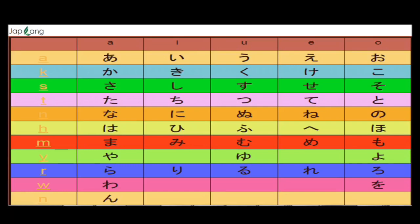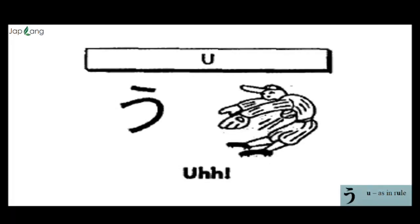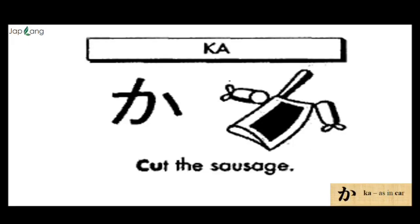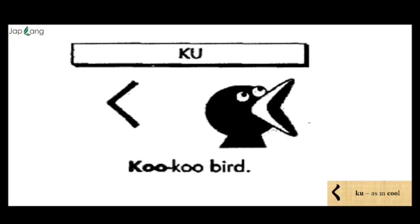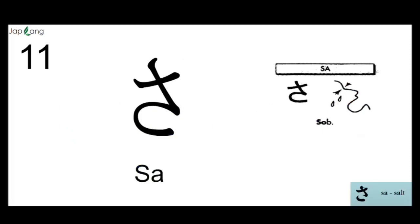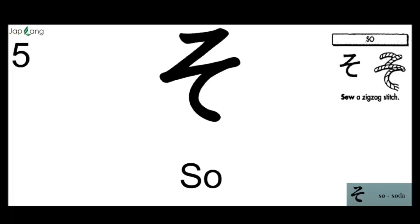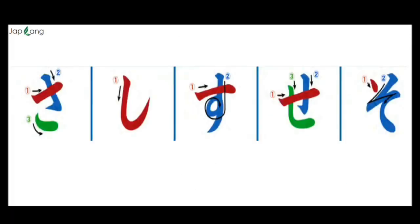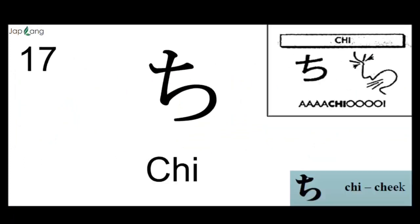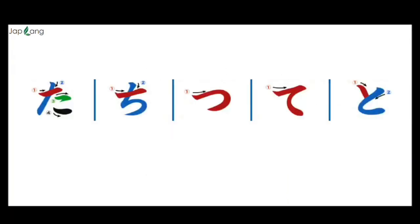Before we learn the 10 new characters, let's revise what we have learned so far. We review the TA group all together: TA, CHI, TSU, TE, and TO.